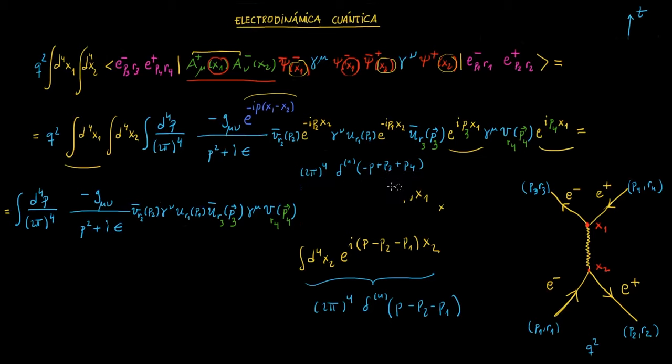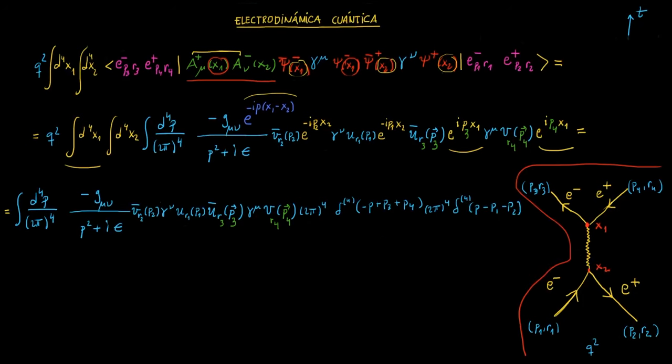Delta de Dirac en cuatro dimensiones, de menos p más p3 más p4, y esto la definición de delta de Dirac con el factor 2pi4 de nuevo, y esto de aquí. Así que lo copio, y esto también, un poquito más pequeño para que me quepa. Entonces vamos a utilizar, por ejemplo, esta delta de Dirac para cancelar esta integral. Lo primero que hacemos es cancelar este 2pi a la 4 con este 2pi a la 4, y vamos a cancelar esta integral de p, a condición de que allí donde aparezca p, ahora tenemos que poner p1 más p2. Por lo tanto, en esta p de aquí, ponemos p1 más p2, de hecho lo pongo por aquí, p1 más p2 al cuadrado, y aquí también, por supuesto, en vez de p, p1 más p2. Y que no se me olvide este q cuadrado que casi se me olvida. Q cuadrado.